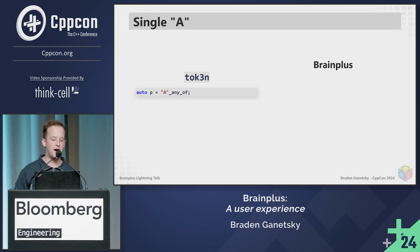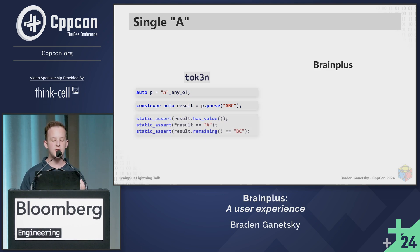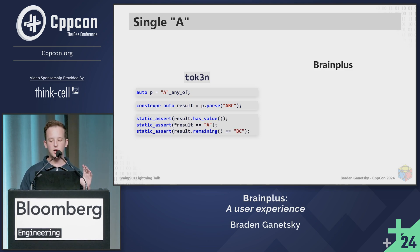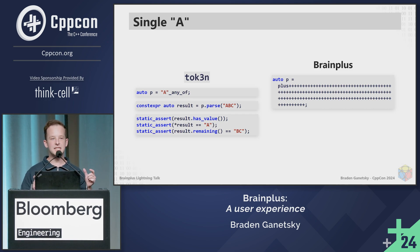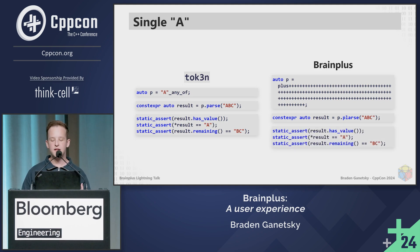What if I want a single character A? In Token, I do this with the user-defined literal 'any of', then I call p.parse. This will actually take off the A character, so the result will be a span of length one containing the A character, and the remainder will have BC as you would expect. In BrainPlus, it looks like this: you have the plus identifier with a bunch of operator pluses, then you call p.parse. It pulls off the A, leaving BC. Same thing.